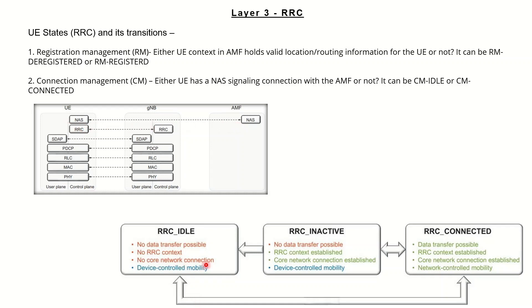In idle mode, there is no RRC context that is enabled and no core network connection is present. All the mobility — the user moving from one cell to another — is done by the UE itself by taking the SIB information from the gNB in the downlink.